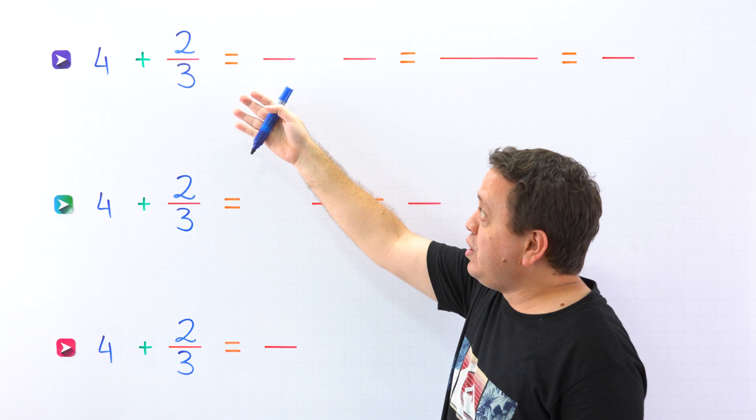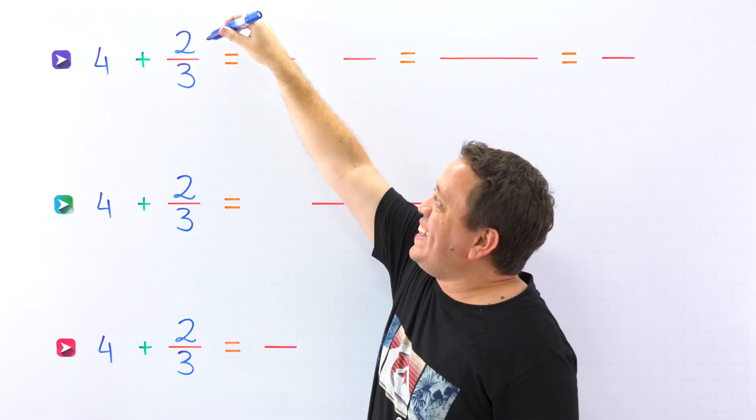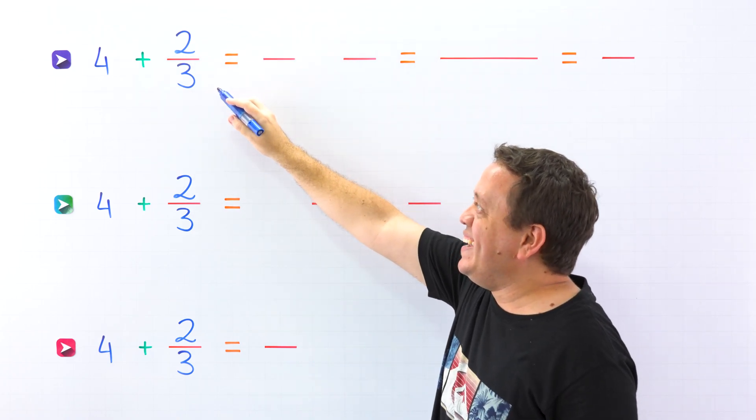We also need to remember that a proper fraction is a fraction where the numerator, the top number, is less than the denominator, the bottom number. For example, 2 thirds is a proper fraction, given that the numerator 2 is less than the denominator 3.